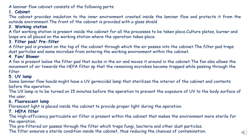Next is the UV lamp — in some laminar flow cabinets a UV lamp is provided, in others it is not — which kills microbes present inside the cabinet. There is also a fluorescent lamp which provides proper light during operation. The most important part is the HEPA filter — High Efficiency Particulate Air filter — present inside the cabinet, which makes the environment more sterile. Pre-filtered air passes through the HEPA filter, which traps fungi, bacteria, and other dust particles, ensuring sterile conditions and reducing the chances of contamination.